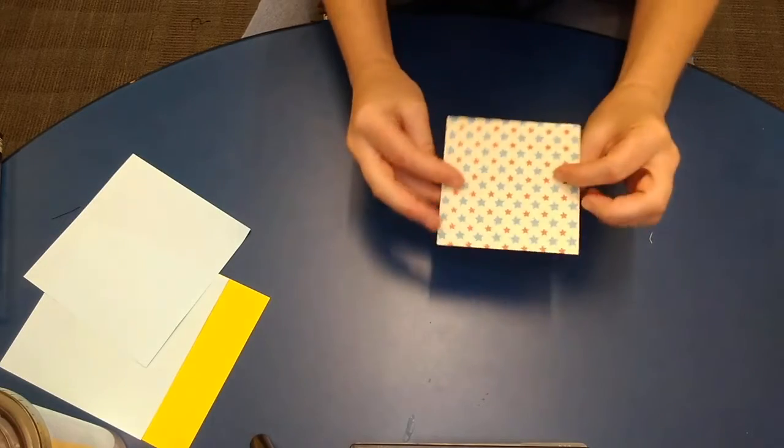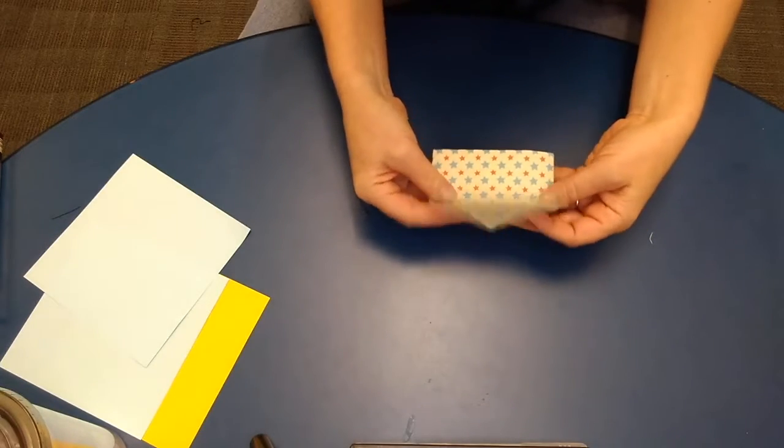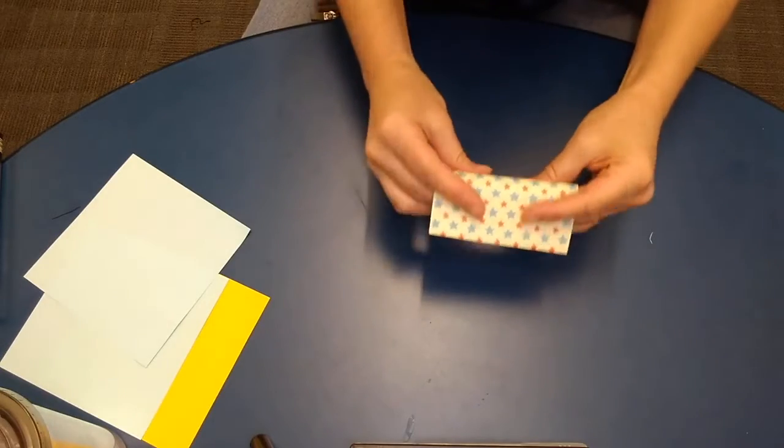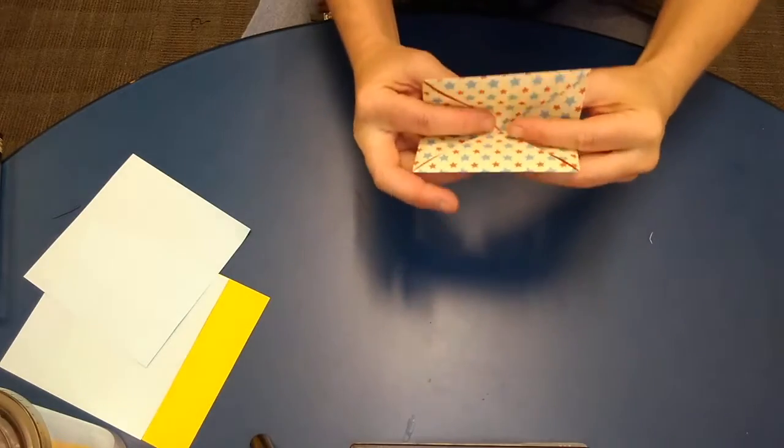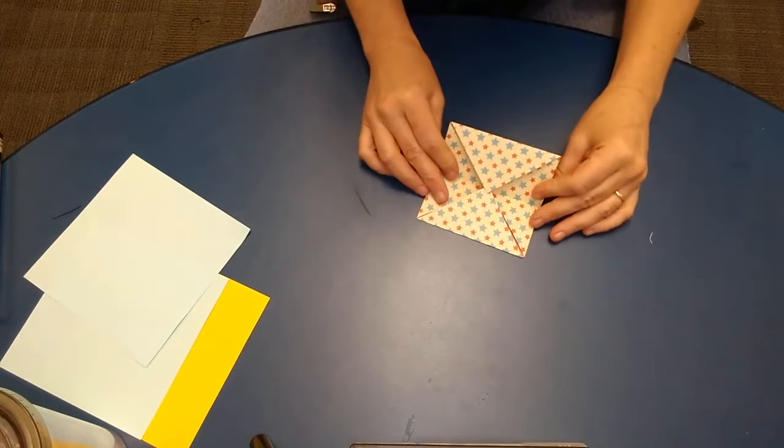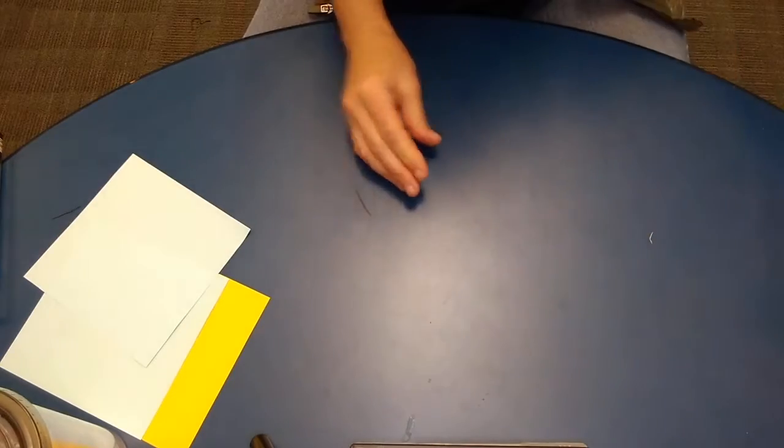Now one of your edges or one of your lengths is going to have this crease in it. You're going to fold your paper this way right along that crease. So you have a rectangle. Repeat this with all four pieces of the paper.